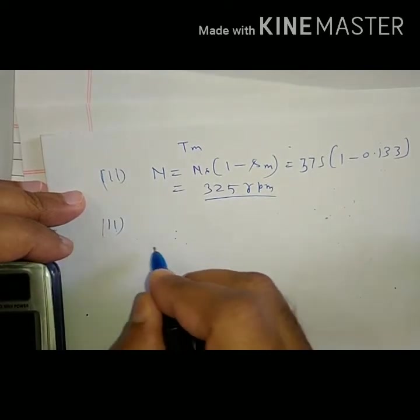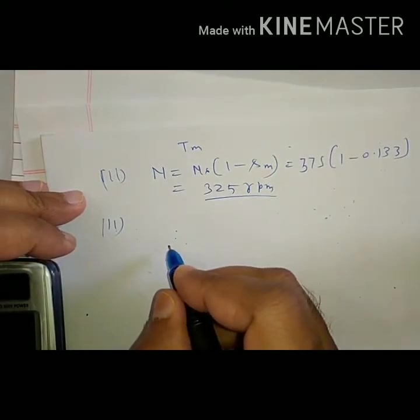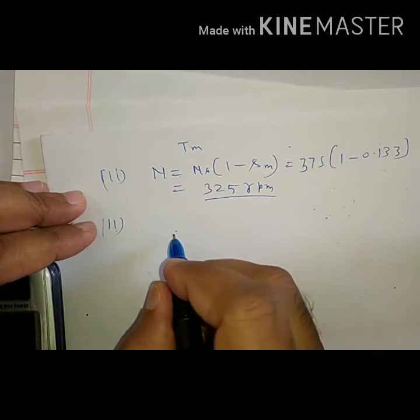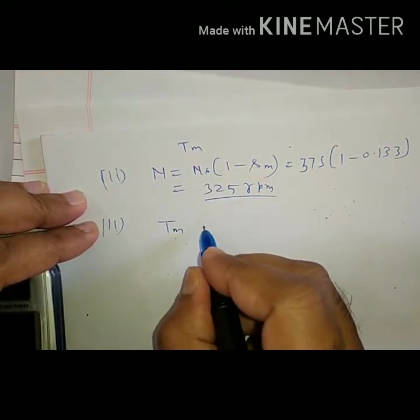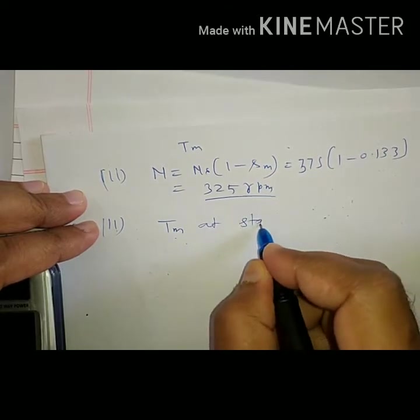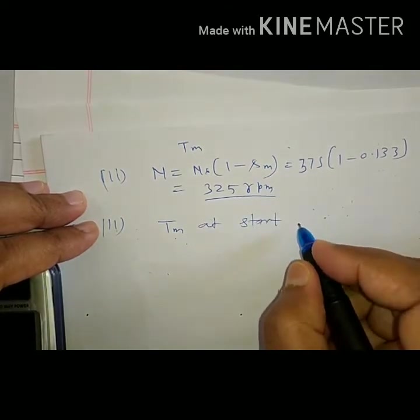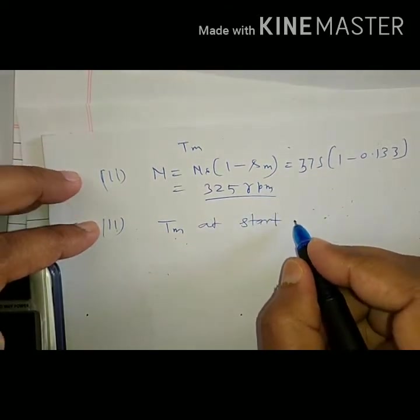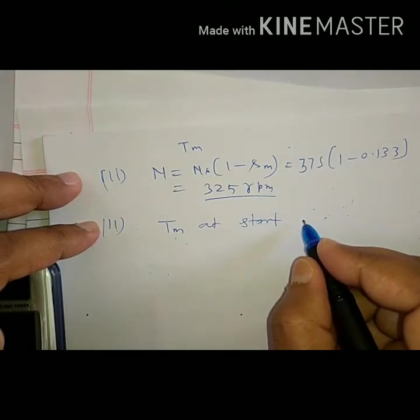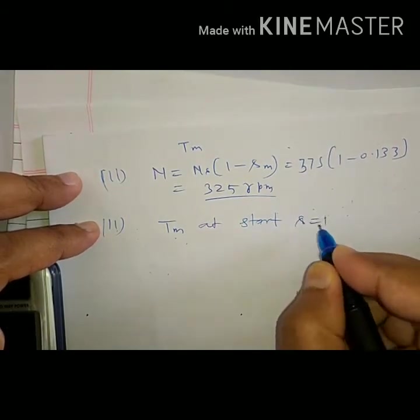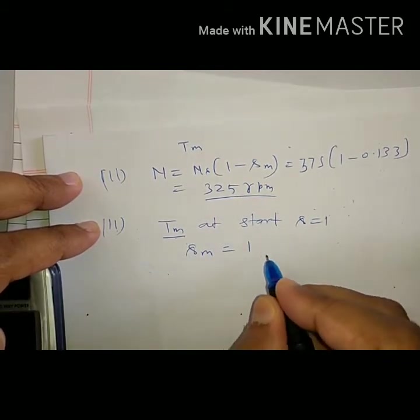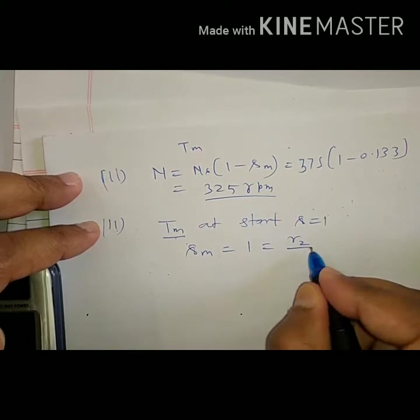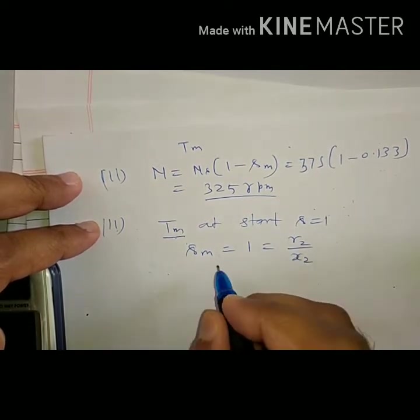Third is rotor resistance to be added so as to get Tmax at start. What is the condition for starting torque? S must be 1. But here for Tmax, S is nothing but SM. So SM must be 1, that is nothing but R2 by X2.